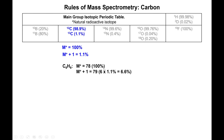If the M+ mass is 100%, the M+1 mass — based on carbon-13 — is simply the six carbons multiplied by 1.1%, which gives an overall percentage of 6.6%. This M+1 peak effectively gives you the carbon content of your molecule.